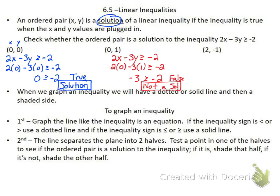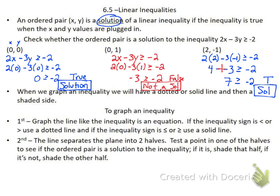And then the last ordered pair — same thing. I'm going to go 2 times 2 minus 3 times negative 1 is greater than or equal to negative 2. So I get 4 minus negative 3 is greater than or equal to negative 2. Remember that this is the same thing as a plus sign, so I can change that into a plus sign. That gives me 7 is greater than or equal to negative 2 — that is true, and so this is a solution. I'm just plugging in my ordered pair and seeing whether it's true or not; that tells me whether it is a solution.